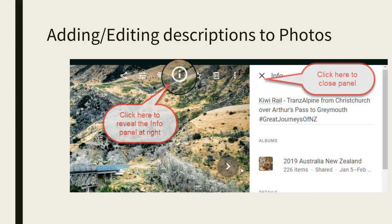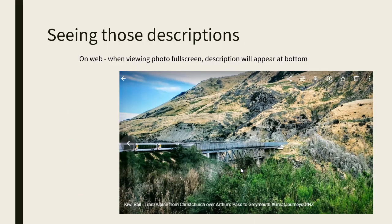There are lots of times that you want to just put in some information about a photo. On a computer, you click that 'I' and it opens up an information panel on the right, and there's a place for you to write a description. Then you can close the panel. When you want to see those descriptions, just view the picture full screen and you should see any description shown down there at the bottom.